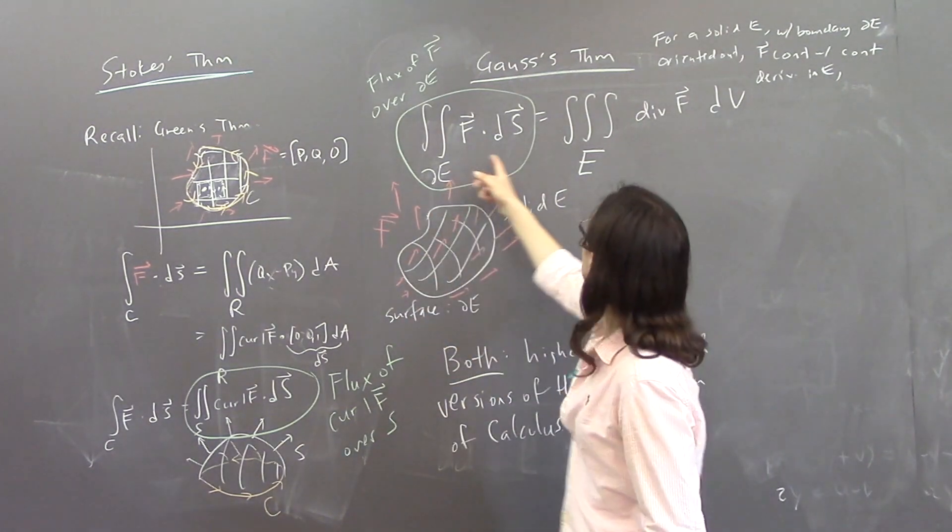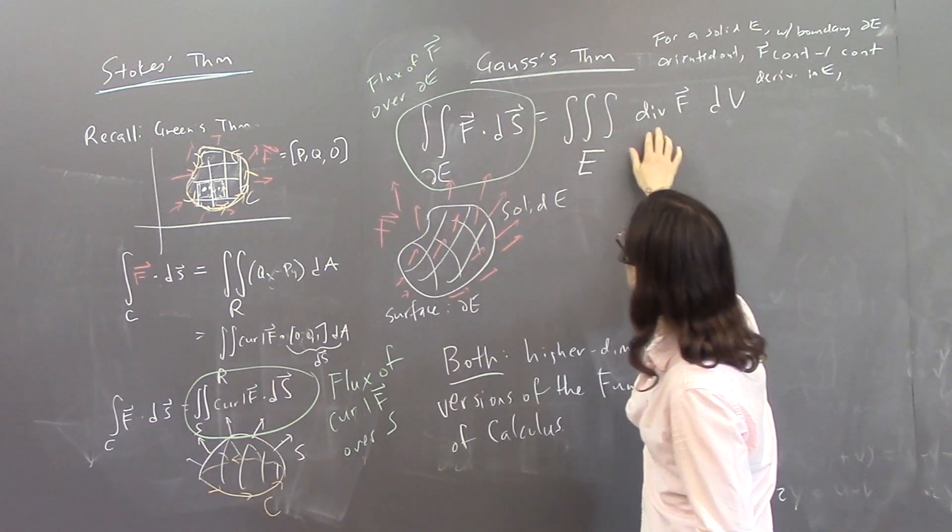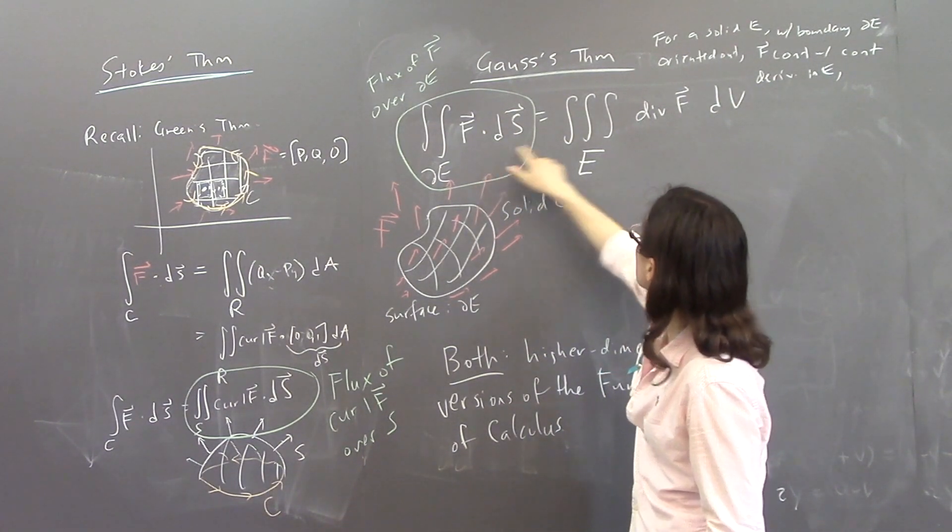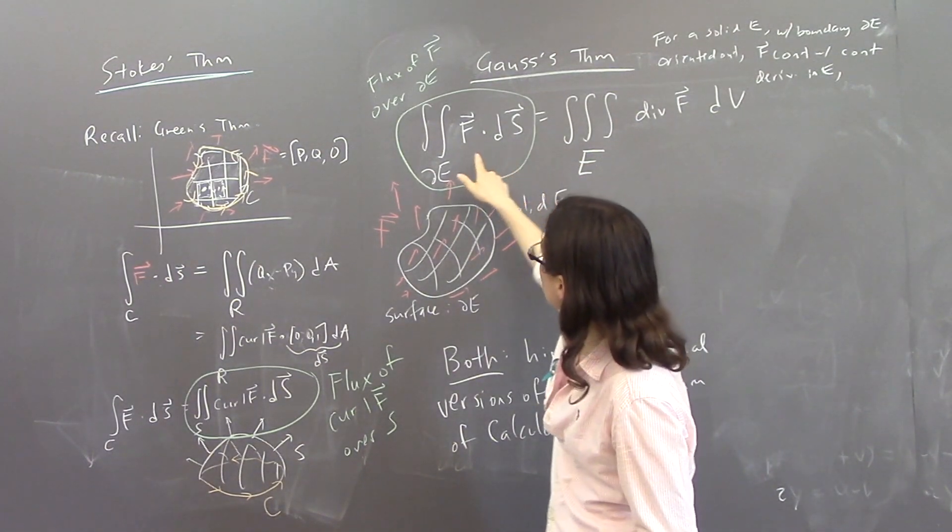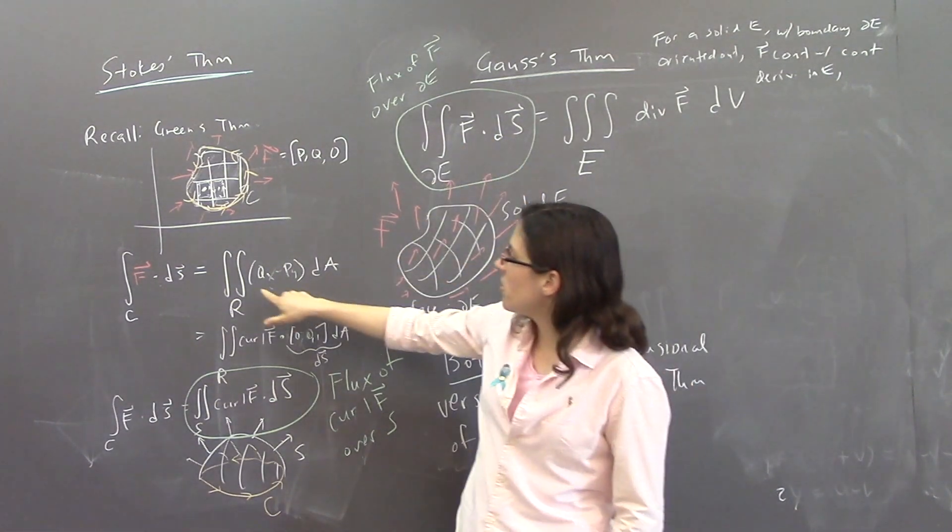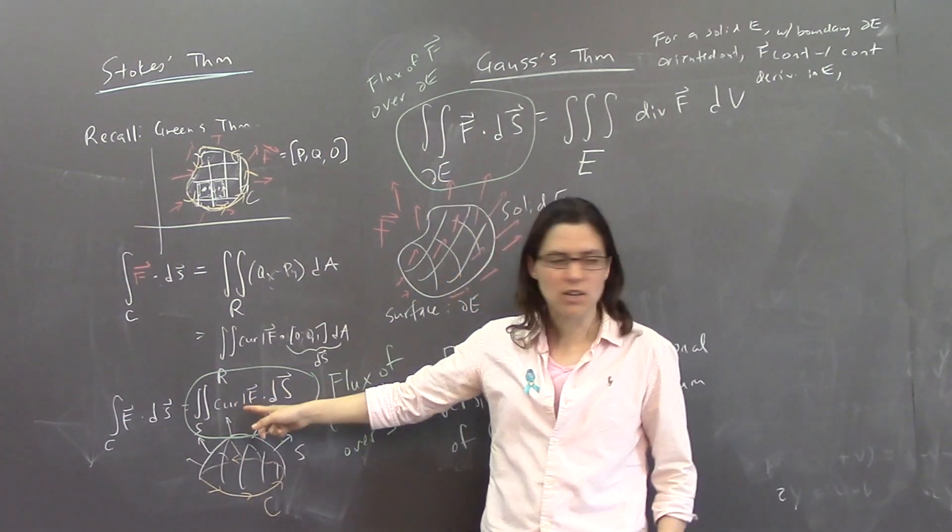and you want to compute the flux of F over it, then you pretty much have to use Gauss's theorem. If you, if your surface is not closed, well, you'd like to use Stokes theorem. But Stokes theorem, you can only integrate a curl vector field.